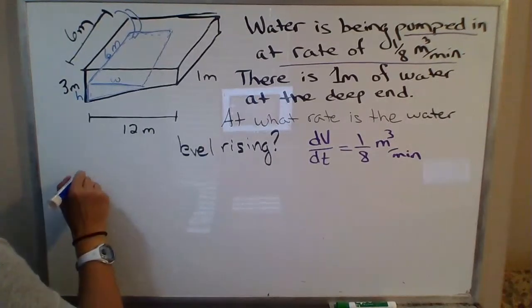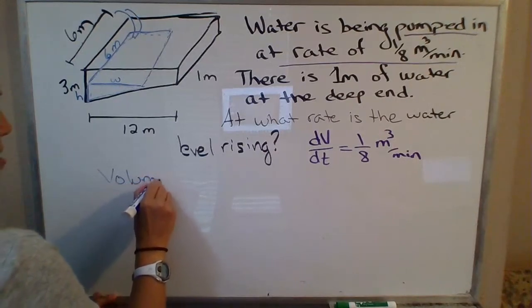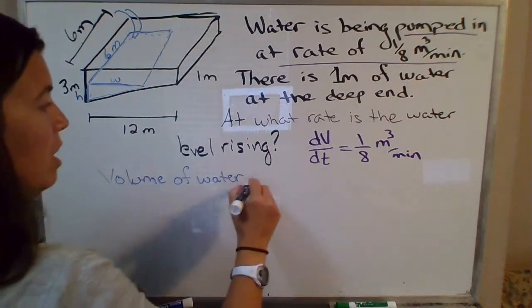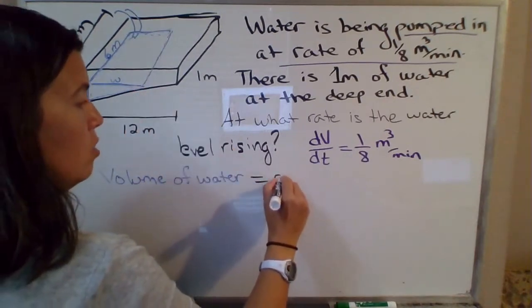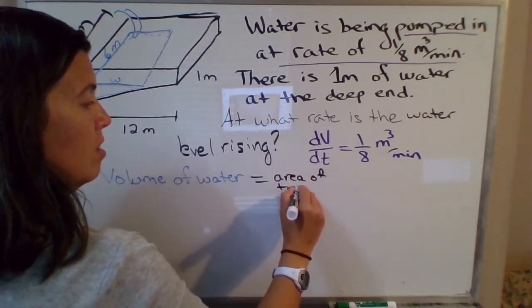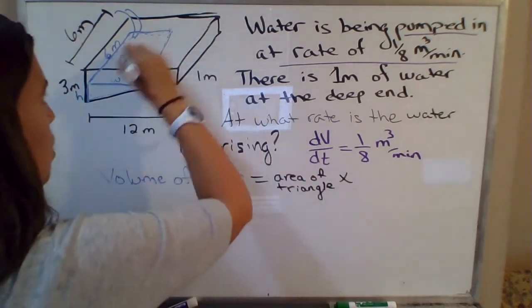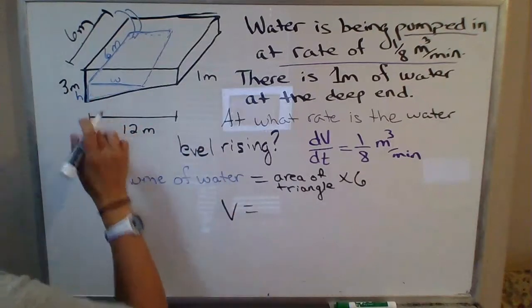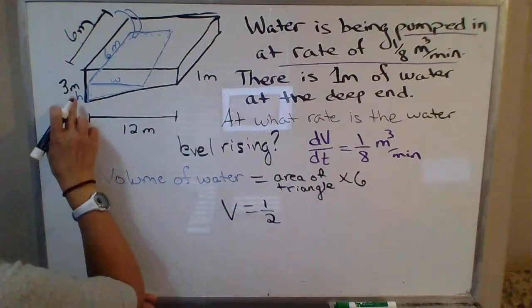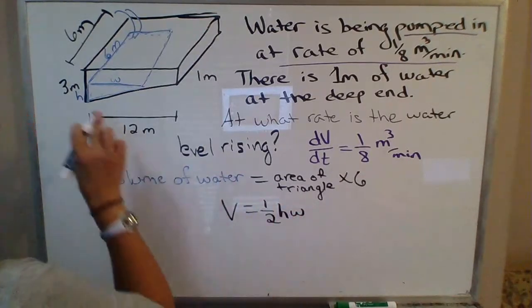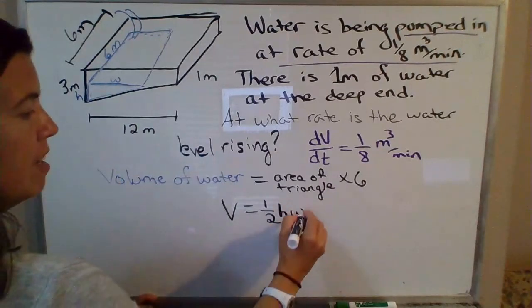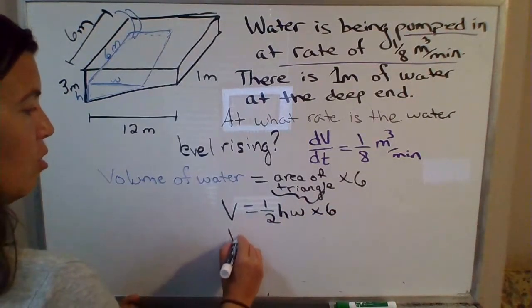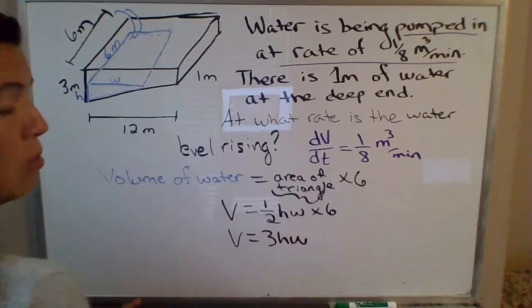So the volume of water—I'm going to switch to black, this blue is kind of dying. Volume of water will equal the area of that triangle in the front times that width across, which is six. So the volume of water equals area of that triangle, one-half base times height. One-half, I'll call this the base, which is actually h times w. Just base times height in this case will be h times w times one-half. So that right there is the area of the triangle, so we need to multiply by six. So volume is six times one-half, so this is 3hw.